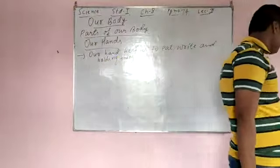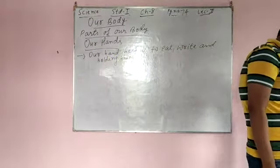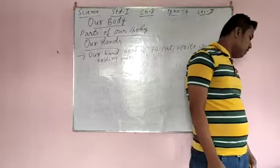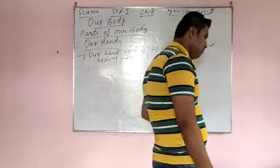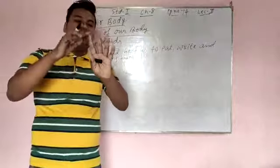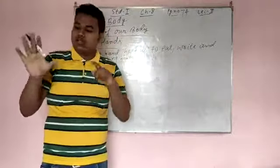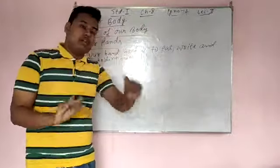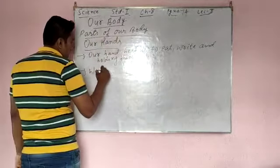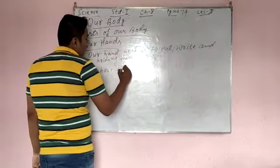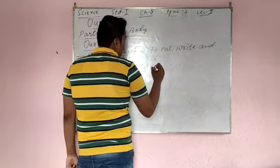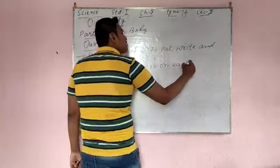We have 5 fingers on each hand. Let me count: 1, 2, 3, 4, 5 on this hand, and 1, 2, 3, 4, 5 on this hand also. So we have 5 fingers on each hand.